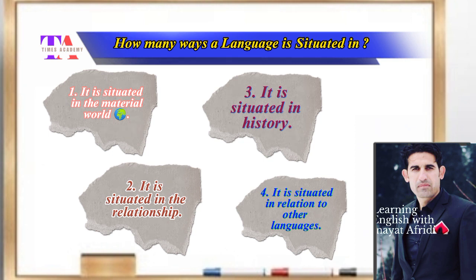A language is situated in at least four ways. Number one, it is situated within the material world. Number two, it is situated within relationship. Number three, it is situated in history. And number four, it is